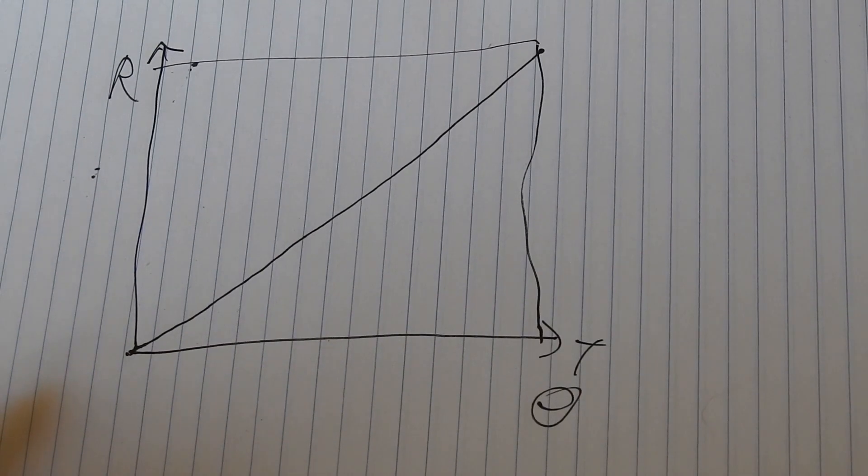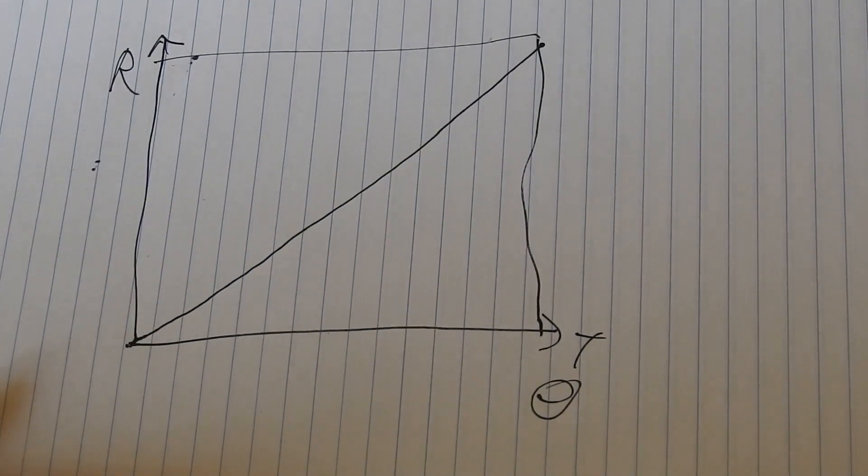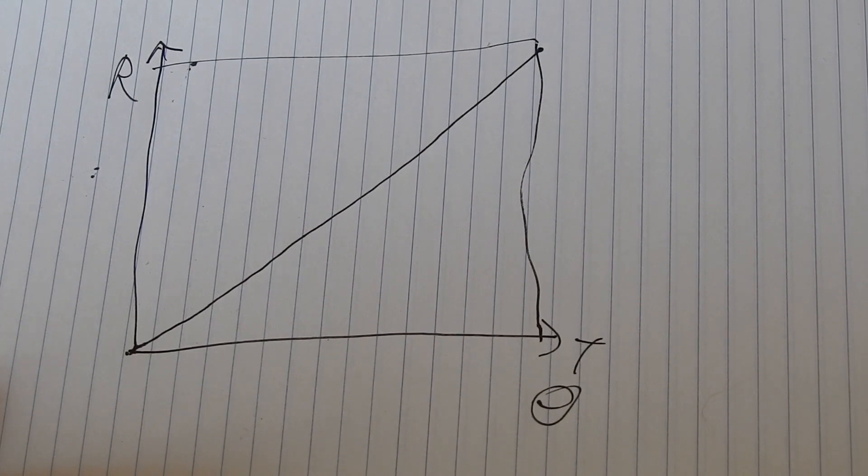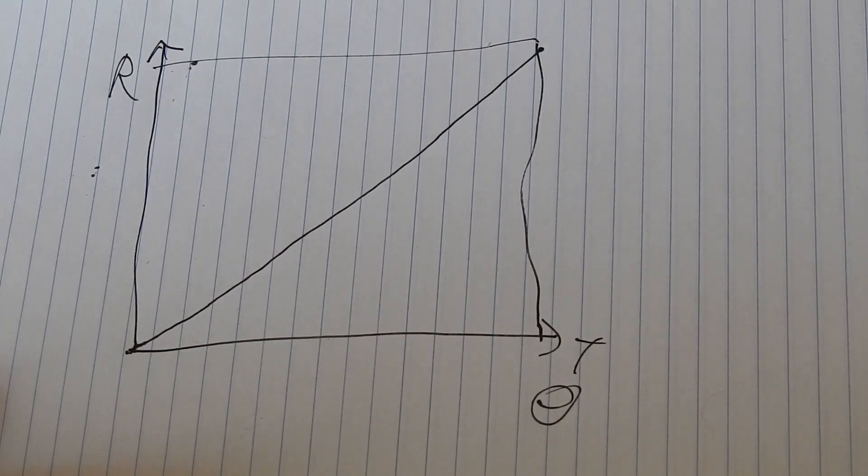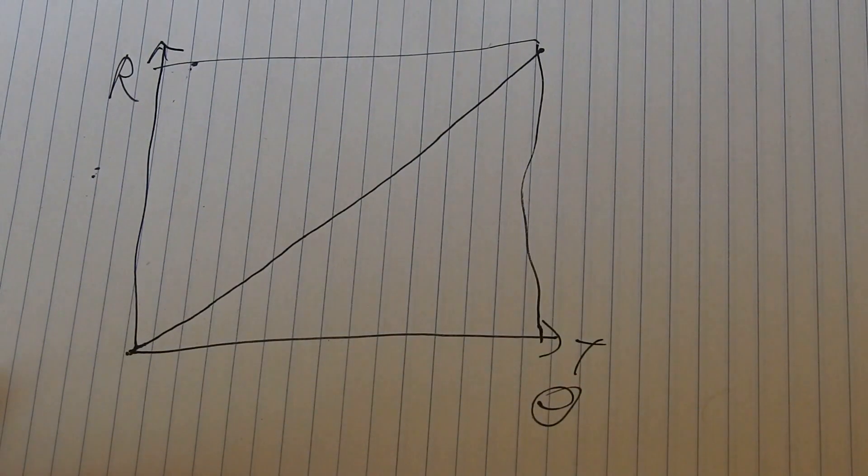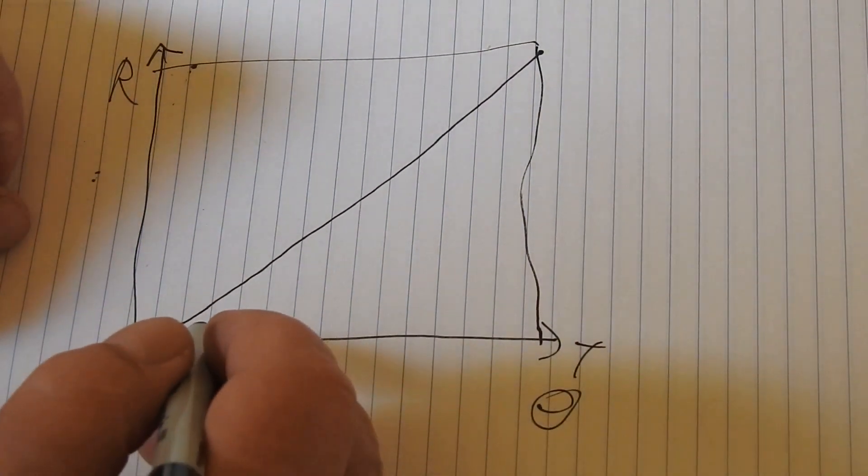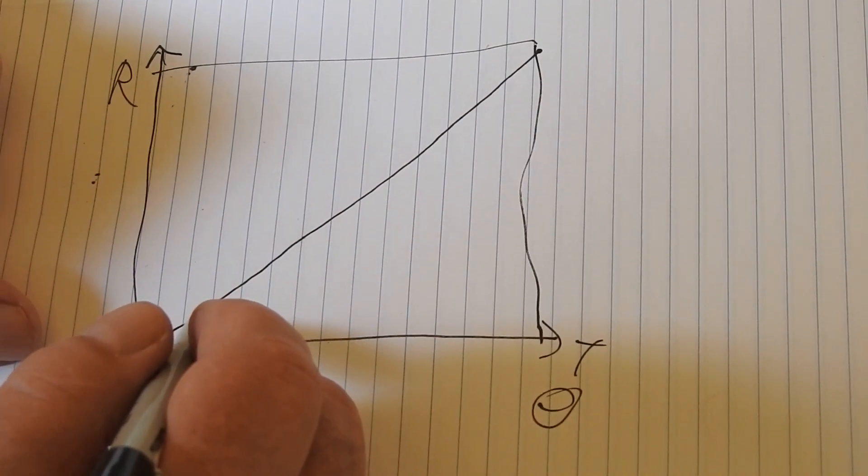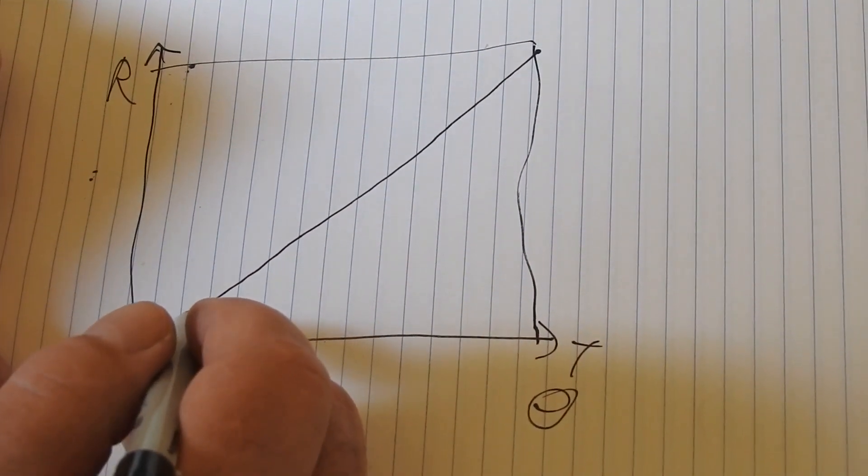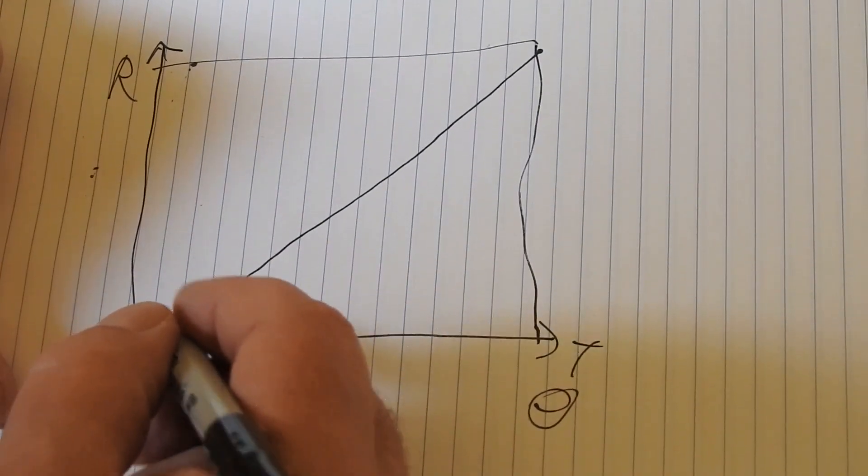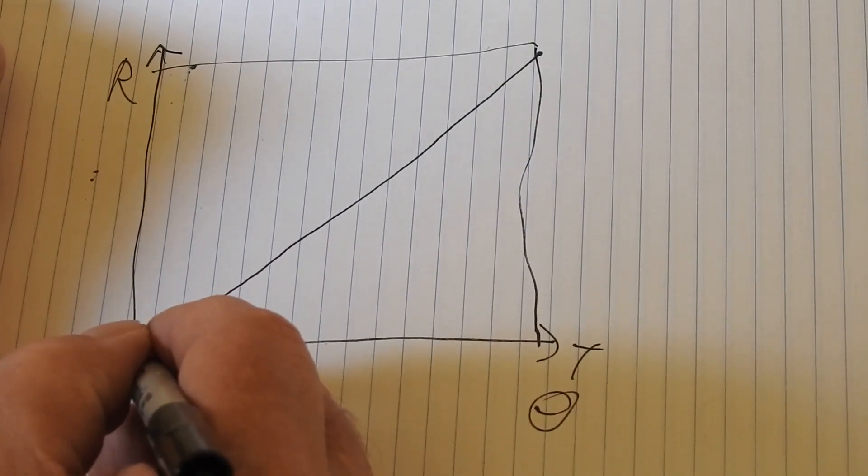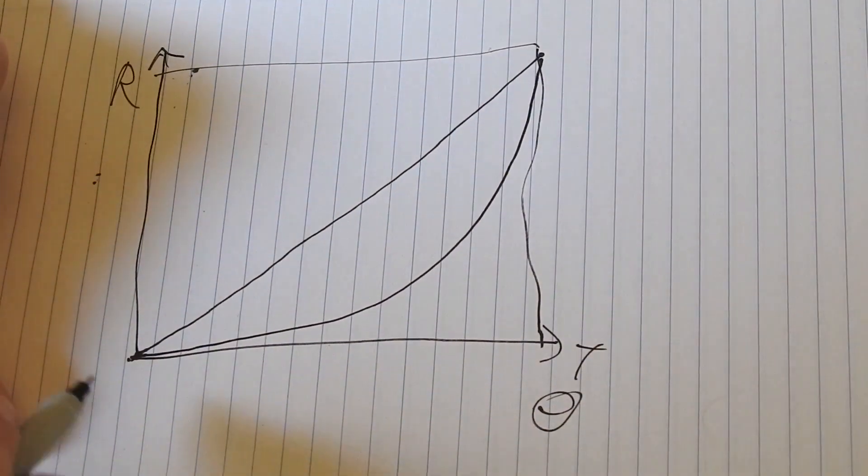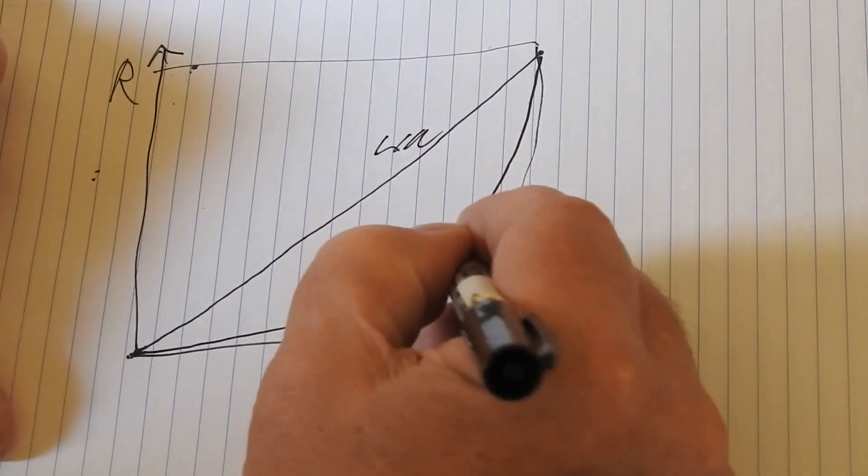But there is another type. Log pots, which are used, typically in audio, for controlling volume. Because the human ear hole has a non-linear response to power. To get something to sound twice as loud, it has to be ten times as powerful. So what they want in a log pot is something like this. A curve like that. So linear, log.